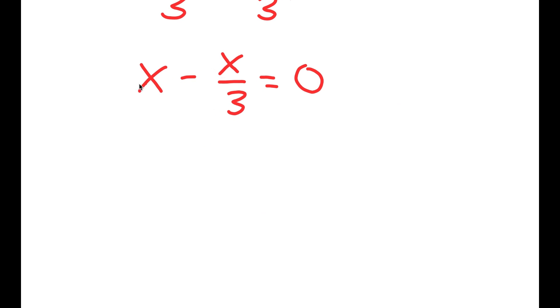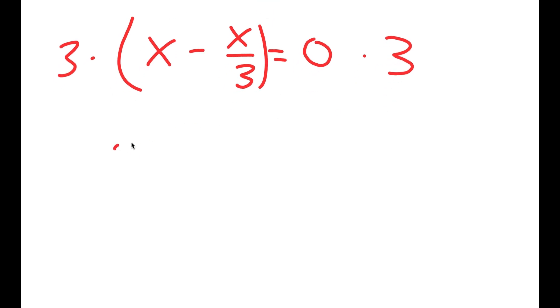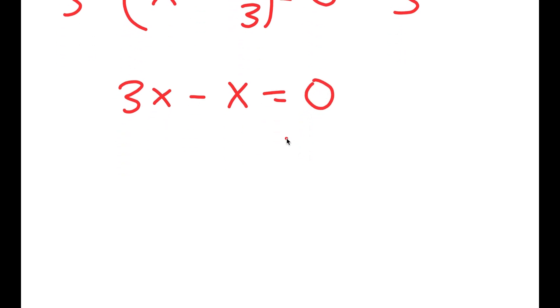So the correct way is this one. I get x minus x over 3 is equal to 0. And now I'm going to multiply both sides by 3. So now I get 3x minus x is equal to 0. 3x minus x is 2x. So I get 2x is equal to 0.